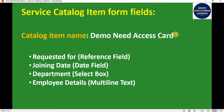The item is similar to the Access/Acrobat/Dreamweaver items we've seen earlier. The fields this item must have are: Requested For (a reference field), Joining Date (a date field), Department (a select box), and Employee Details (a multi-line text box). We have to implement all these four fields in a single request item — essentially a form for the end user.